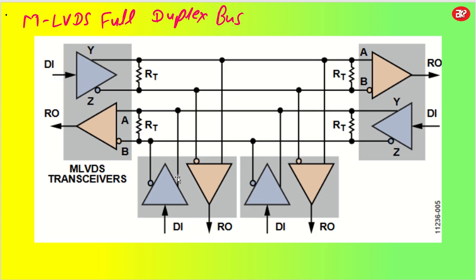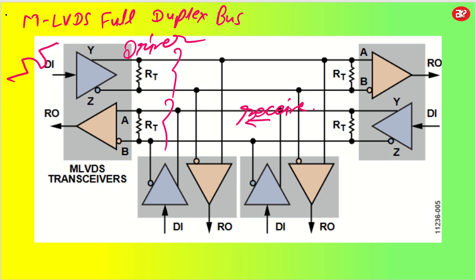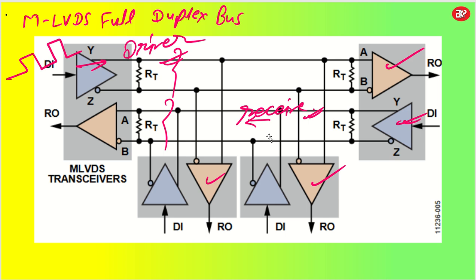Full duplex will be having two buses — one will be for the driver signal and another one will be for the receiver signal, and both can work at a time. Let's say we have one clock source going into this bus; it will convert it into a differential signal and then go into the receiver output. Similarly, when another driver sends the signal, that bus will be utilized to send the signal to the receiver output. So both buses are utilized together — that is called full duplex.